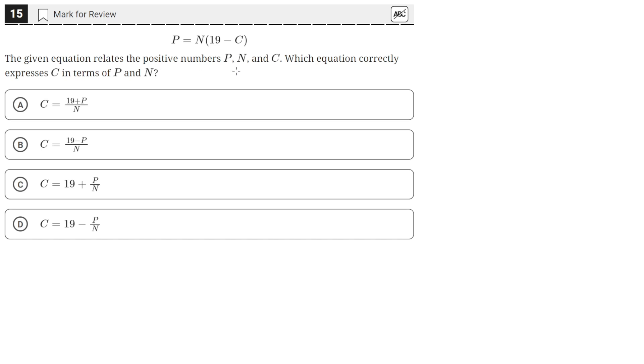The given equation relates the positive numbers P, N, and C. Which equation correctly expresses C in terms of P and N? So we're given this equation here, P equals N times the quantity 19 minus C.